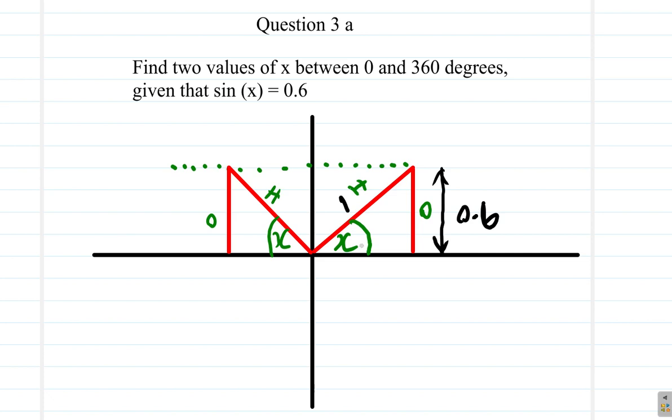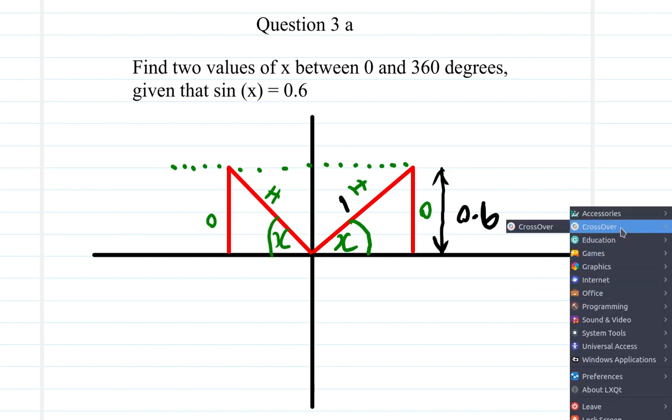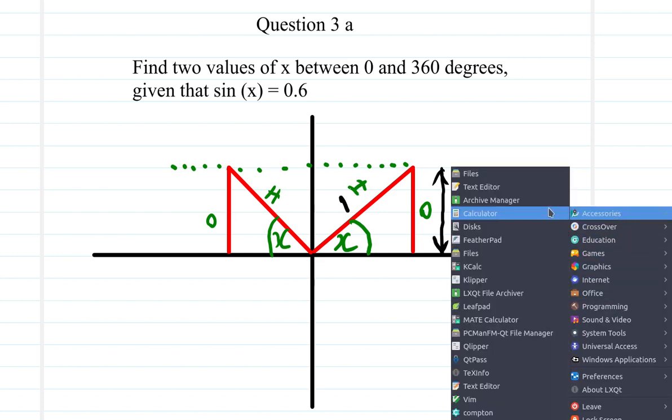0.6 means 0.6 over 1. It means that this height here is 0.6, while the hypotenuse is 1. And, by the way, if sine x is 0.6, we can use our calculator to get the angle x. Let's do that now.